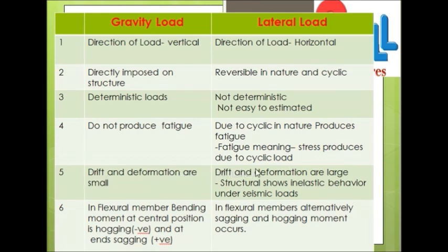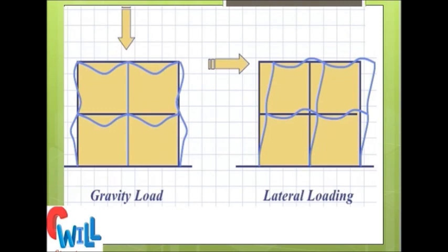The next difference is that drift and deformations are small under gravity loading, while under lateral loading the drift and deformations are large, as the structure shows inelastic behavior under seismic load. Drift and deformation refer to the horizontal displacement of the structure floor by floor. It is very small under gravity loading, but under horizontal loading the horizontal deformation of the structure is really large.